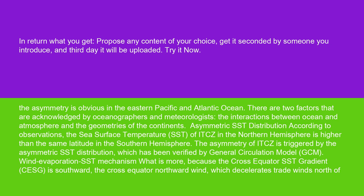Asymmetric SST distribution: according to observations, the sea surface temperature, SST, of the ITCZ in the northern hemisphere is higher than at the same latitude in the southern hemisphere. The asymmetry of the ITCZ is triggered by the asymmetric SST distribution, which has been verified by General Circulation Model, GCM.